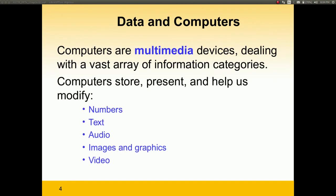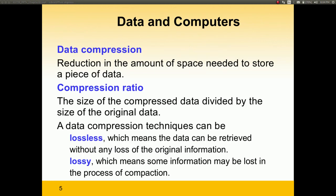That's a lot to cover, so let's start with the first section, which is about numbers. Computers are pretty much multimedia devices. They're being used to represent numbers, text, audio, images, graphics, and video. What exactly is data compression? Data compression is the reduction of the amount of space needed to store a piece of data — regardless of whether it could be numbers, graphics, videos, or audio. If you reduce the amount of space needed to store that piece of data, then you are actually compressing it.